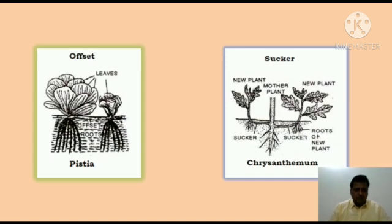The last sub-aerial stem modification is the sucker. It arises from the basal underground part of the main stem and grows horizontally for a distance under the soil, then emerges obliquely upwards. It develops a leafy shoot and adventitious roots before separating from the mother plant. Example: Chrysanthemum.